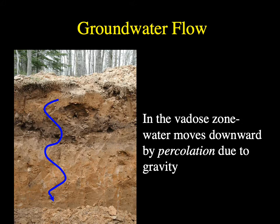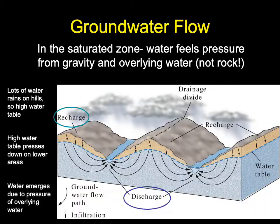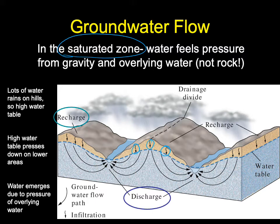In the vadose zone, water moves downward by percolation — a circuitous path as water moves through the subsurface, pulled downward by gravity around particles. Percolation only happens in the vadose zone because the water there is undersaturated. The flow of groundwater in the saturated zone is different. In the saturated zone, water does not feel pressure from overlying rock. Instead, it feels pressure from two things: gravity and the pressure from overlying water.